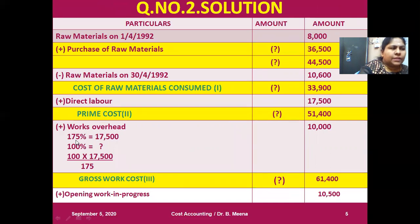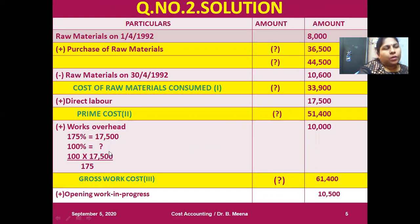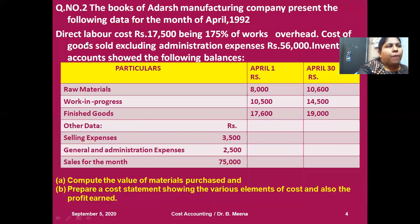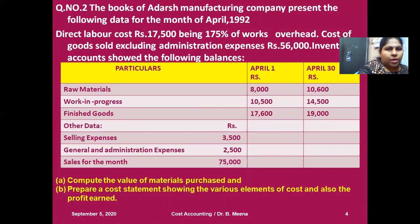Look at the solution for how I calculated this value. If 175 percent equals 17,500, then 100 percent equals what? So 100 multiplied by 17,500 divided by 175 — then I'll come to know what my works overhead is. My works overhead is 10,000. So by reading the statement 'direct labor cost 17,500 being 175 percent of works overhead,' I can find the value of works overhead. There are two pieces of information available in this one statement.